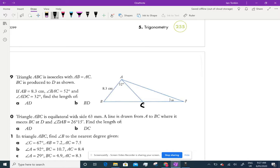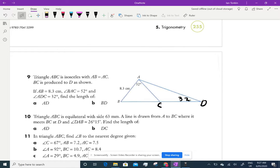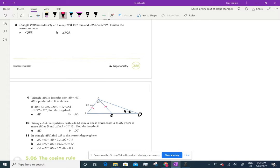That's C, that's 32, and that's D. So triangle ABC is isosceles with these two sides being equal, so that's 8.3. If AB equals 8.3 and angle BAC equals 52 degrees, angle ADC equals 32 degrees, find the length of AD.